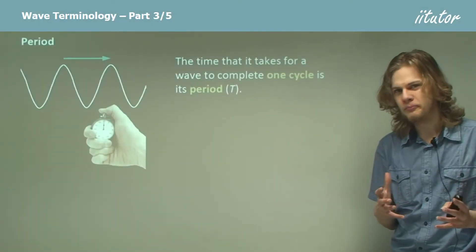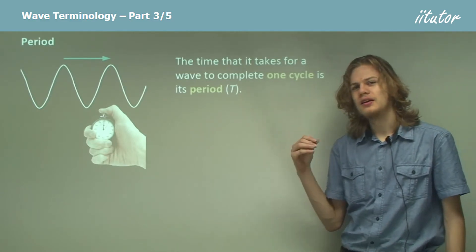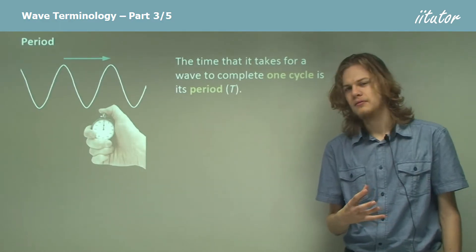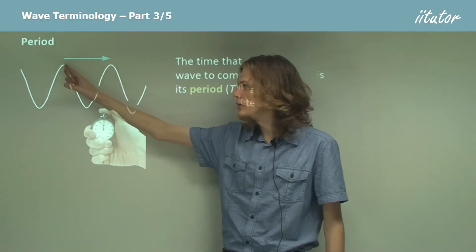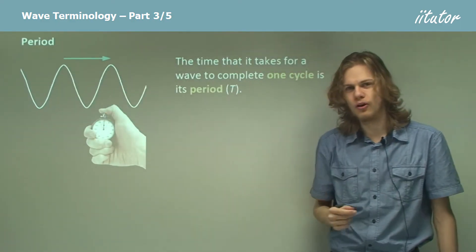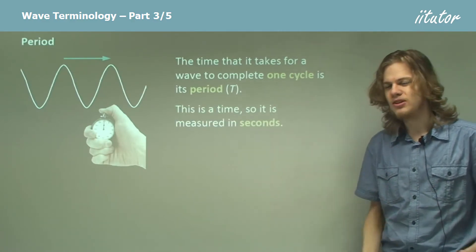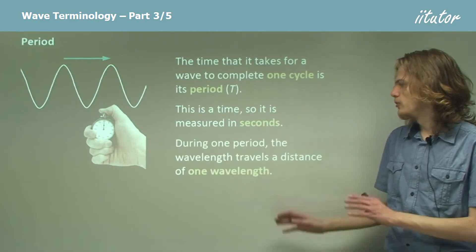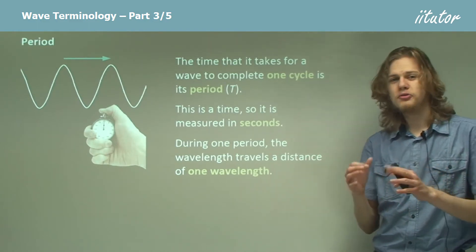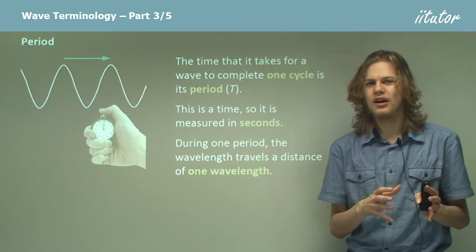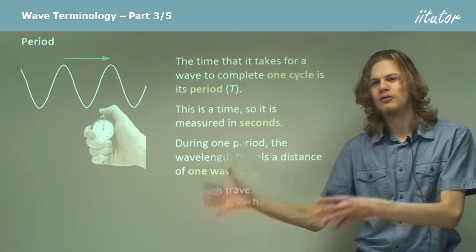Next thing we'll talk about is period, which is a rather important property of the wave. A period is the time that it takes for the wave to move one wavelength. It's the time it takes for a crest or a trough to move from here over to the next crest or trough. So it's a time and we measure it in seconds. During one period the wave travels one wavelength, and that means that after one period it looks exactly the same as it did when it started.